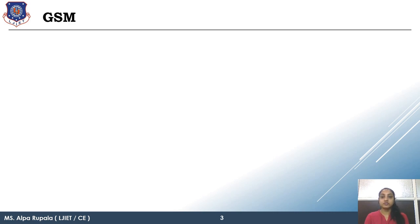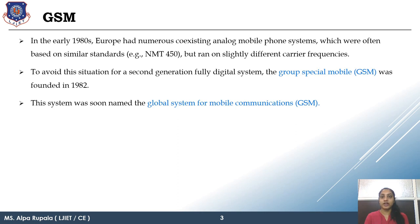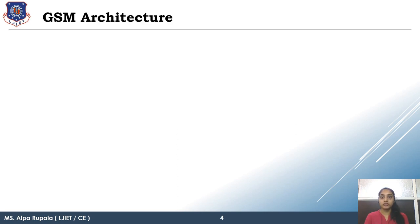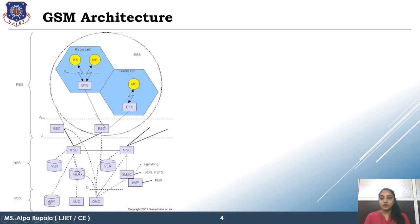We have already learned in the previous lecture what GSM is and how it was formed. Now we are directly moving forward to the GSM architecture. Basically, GSM architecture is divided into four parts: first part is RSS, second part NSS, third part OSS, and fourth part is data infrastructure.